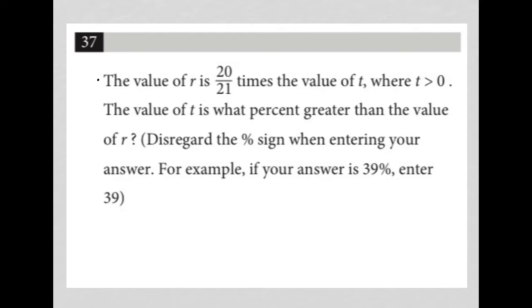This question says the value of R is 20 over 21 times the value of T. I know the strategy here is translate word problem. I'm going to translate that sentence into its mathematical equivalent, which would be R is—is always equals—I just keep the fraction as is, times the value of T. So I just put T inside there.